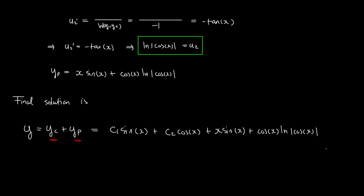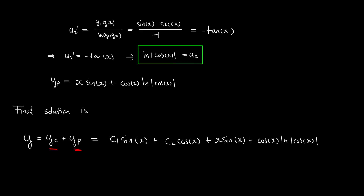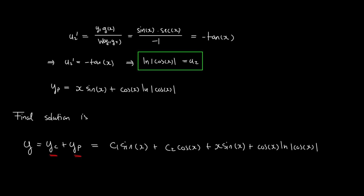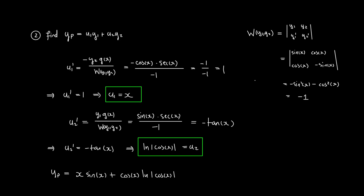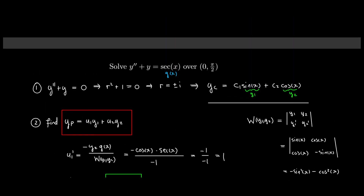That illustrates the method of variation of parameters — it really is the same every single time. One tries to solve for yp in the form u1*y1 plus u2*y2, and then we have two very nice formulas for calculating u1 and u2 in that expression.